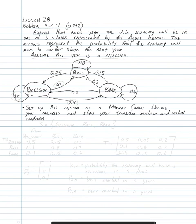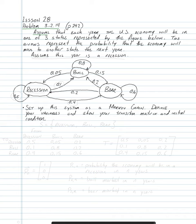This is Video AI for Lesson 28 for Probability. For this lesson, we're going to do Problem 3.2.14 on page 292 of the Modeling in the Real and Complex World Book. We're given two assumptions: first, each year the U.S. economy will be in one of three states represented by the figure below, where each arrow represents the probability the economy will move to another state the next year. Second, this year is a recession. The first bullet asks us to set up this system as a Markov chain — find your variables, show your transition matrix, and initial condition.